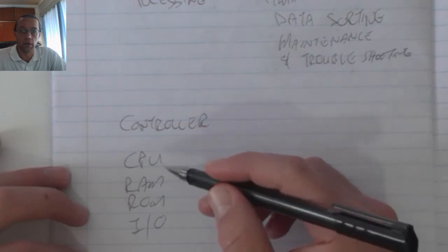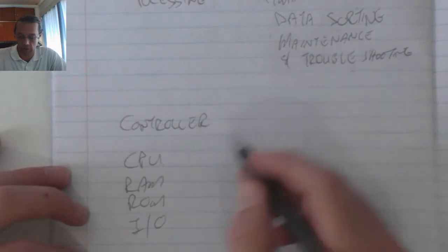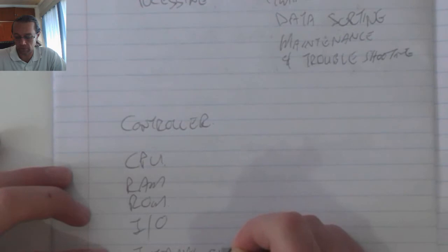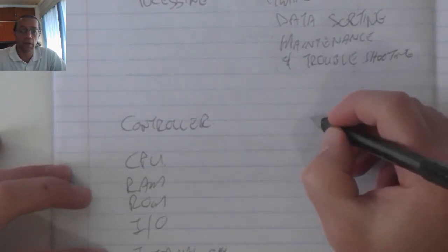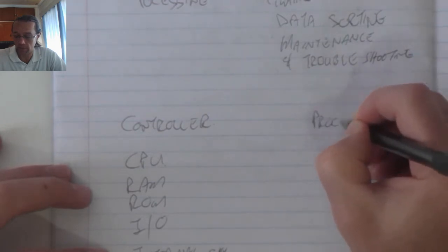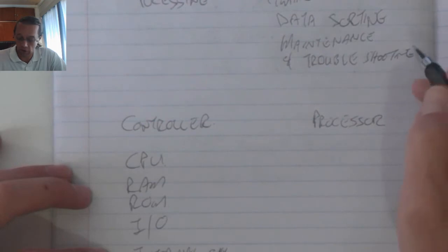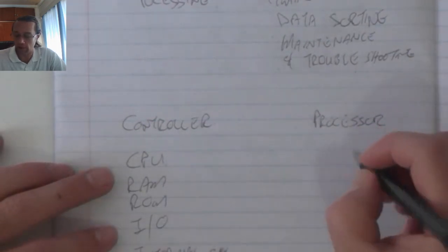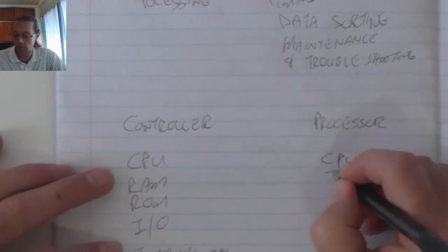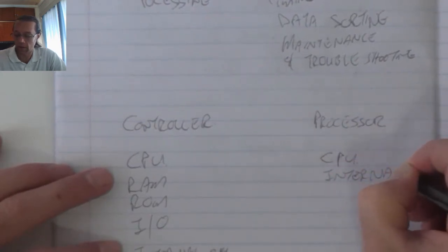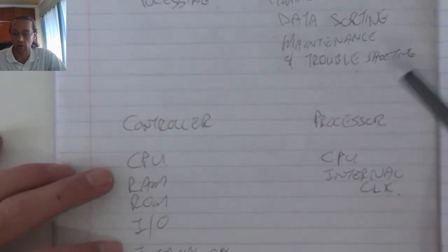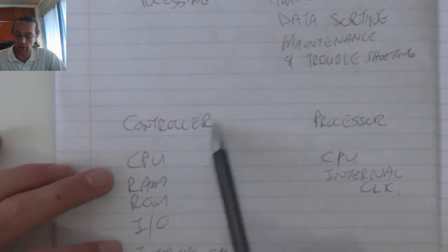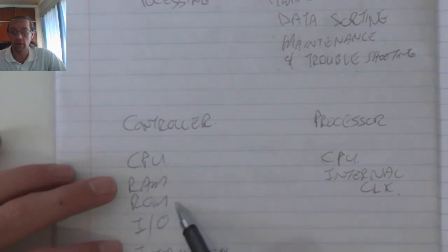Whereas the microprocessor does not have most of these aspects. It consists of a CPU and an internal clock unit. As a result, it is primarily used for processing, whereas the controller has the RAM and ROM, so it has a wider range of functionality.